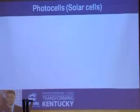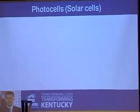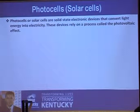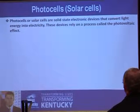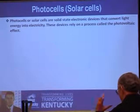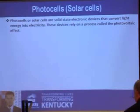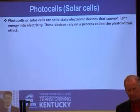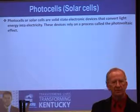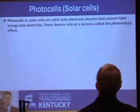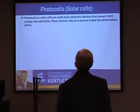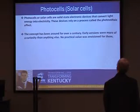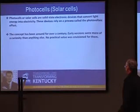Photo cells — sometimes called solar cells — are solid state electronic devices that convert light energy into electricity. You shine light on one of these components and it produces a voltage, not hooked up to any power source. Just light strikes it. These devices rely on a process called the photovoltaic effect. The concept of the photovoltaic effect has been around for a long time — over a century.